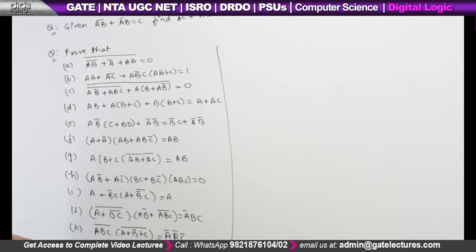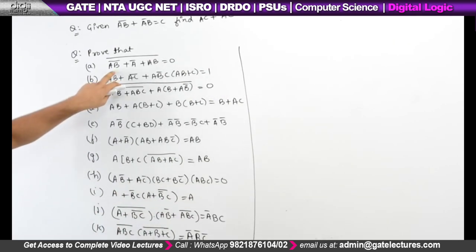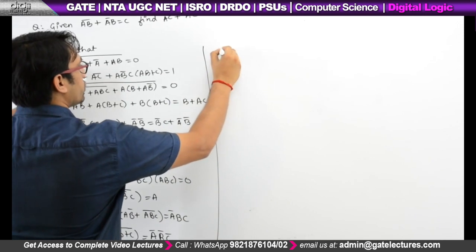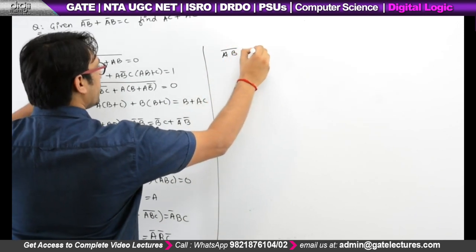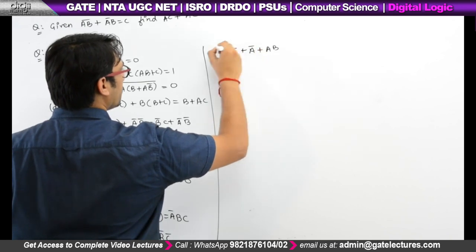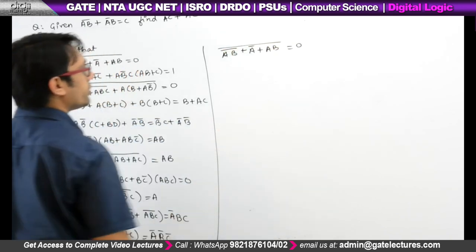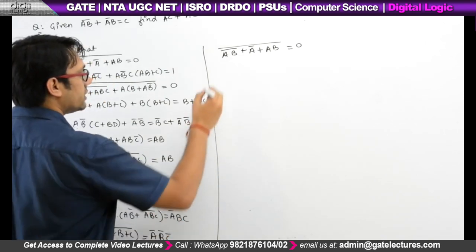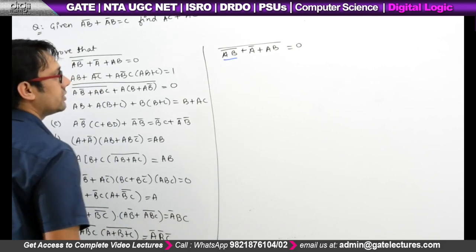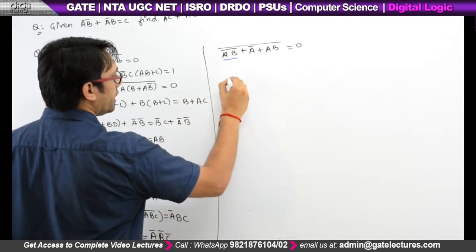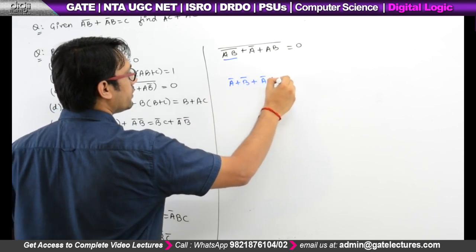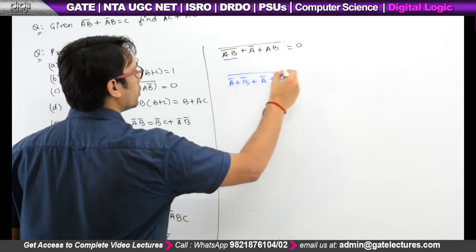Now let us take the next question. It says prove that (AB)' + A' + (A' + B) is equal to A' + B, and also prove that (AB)' = 0. First of all, let us try to expand this. It can be written as A' + B' + A' + (AB)'.